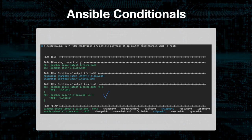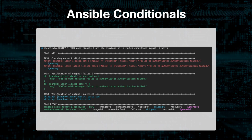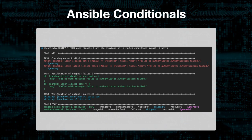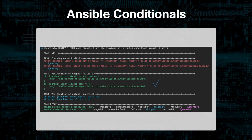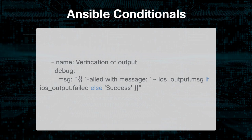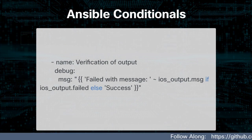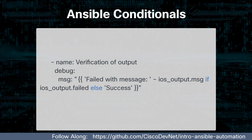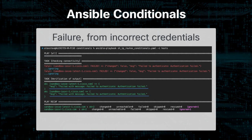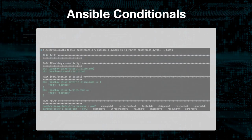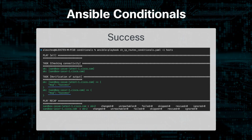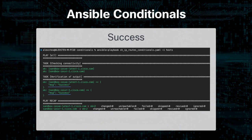This time I changed the passwords of both devices in the host file so they're incorrect. We can see it failed the first task — the connectivity check. Ansible then ran the verification of output failed task and skipped the final success task, based on our conditionals. We can also refactor this using one task with an if/else statement instead of two tasks with when conditionals. It will print the failure message if ios_output.msg is true, exists, or is not empty, and print success if ios_output.failed is false, doesn't exist, or is empty. This demonstrates how to use the variable created with register to dictate what is run and printed.